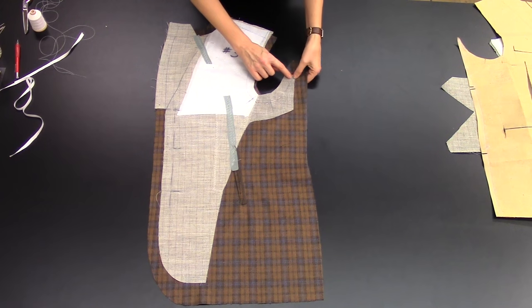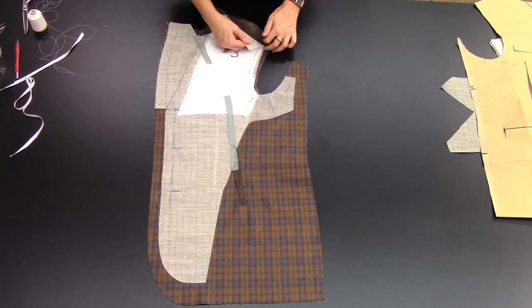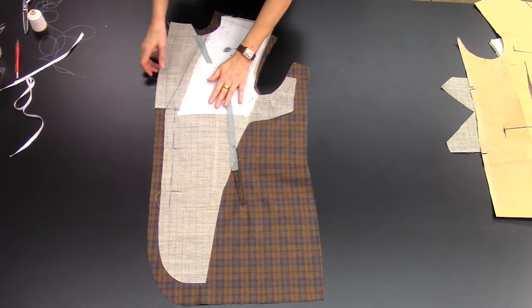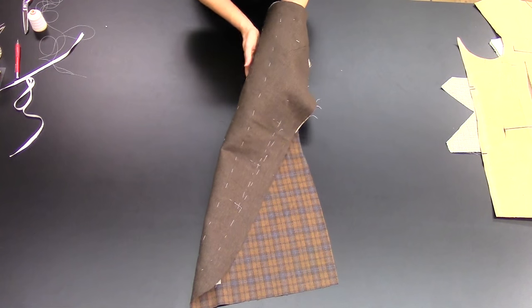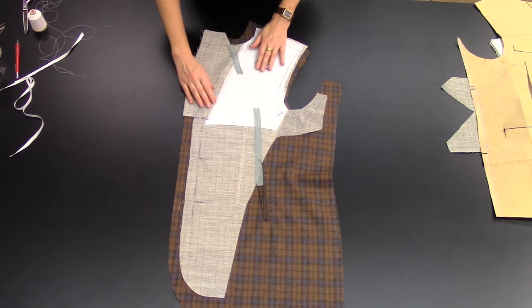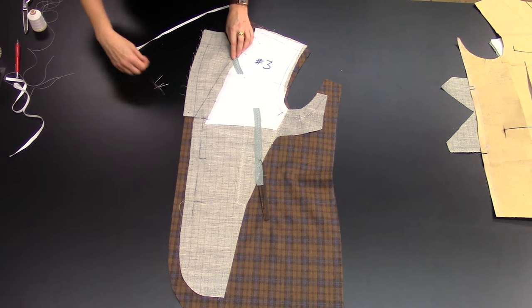You can at this point machine flat line the canvas to the arms eye, again stopping a couple inches from the shoulder here. That lays that all in, and you're checking to make sure that the wool is smooth. Give that a nice press before we launch into taping the roll line.